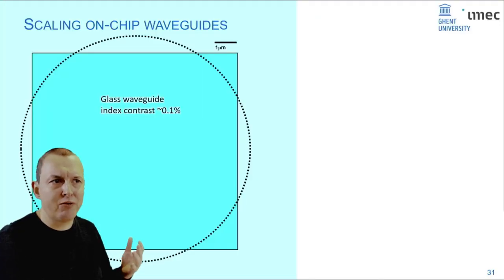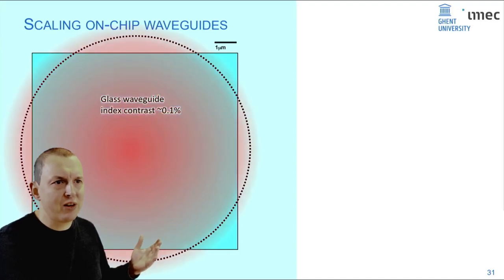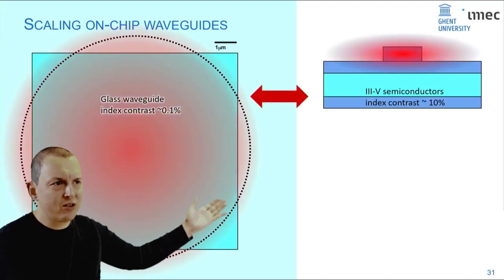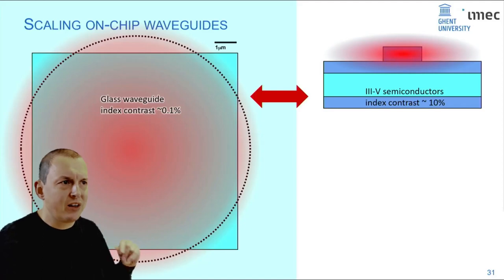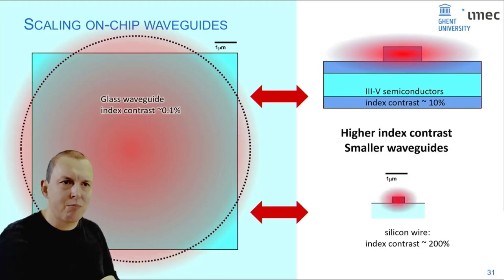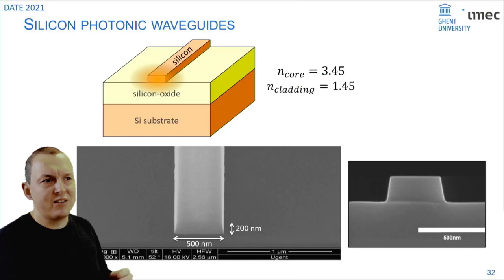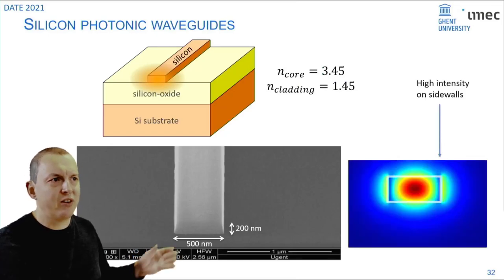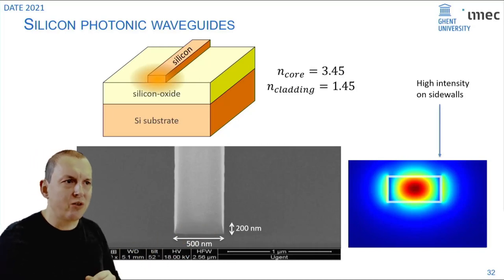If you want to scale this better you have to go to waveguides instead of glass waveguides, for instance to semiconductor waveguides where your index contrast is higher and where you can get smaller waveguide cores and better confinement of light. Or even to silicon waveguides where your confinement becomes really submicron. Then you get waveguides like these which are half a micron wide 200 nanometers thick and tightly confine your light inside your core.